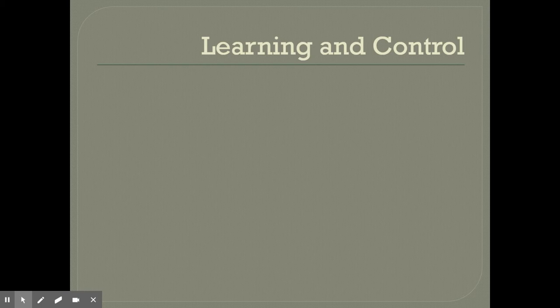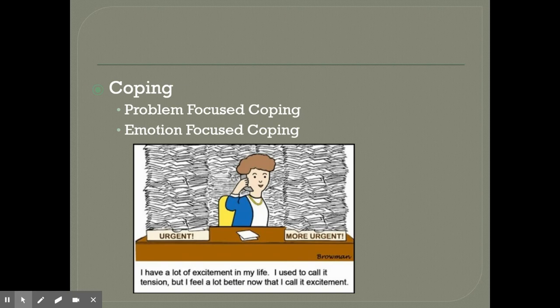Learning also has a lot to do with our feelings of control. When we get into problems, we learn how to deal with them — we call this coping. Sometimes we learn to cope in a way called problem-focused coping, where we deal with and solve the problem directly. Other times, when problems make us feel bad, we learn emotion-focused coping — just trying to make ourselves feel better. For example, instead of doing too much homework, we put it off and watch TV or eat a nice meal because it takes away the emotional pain of the problem.